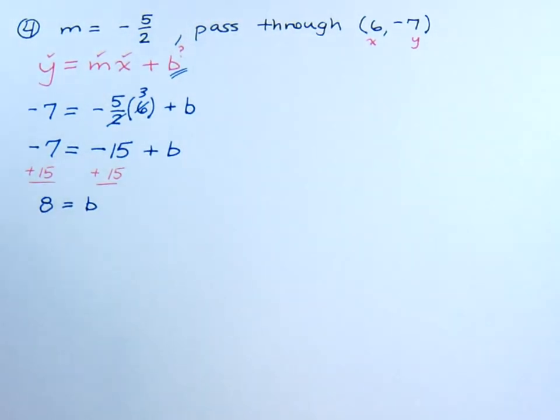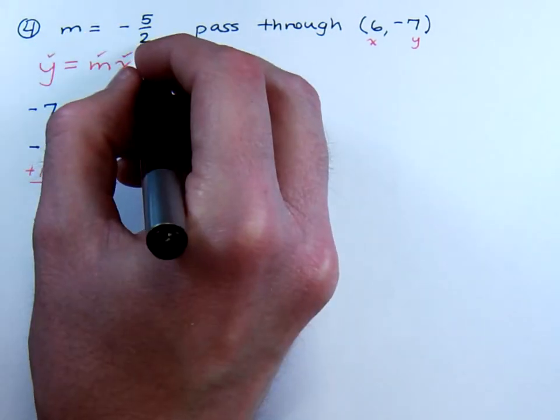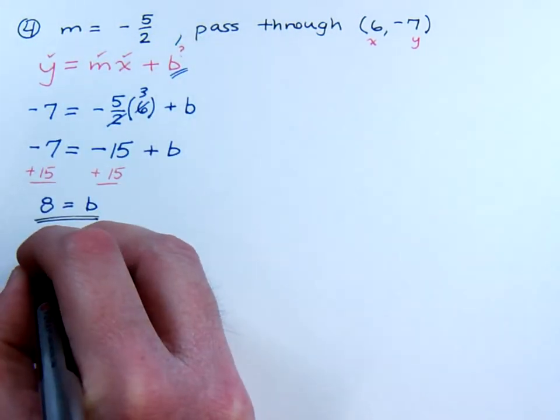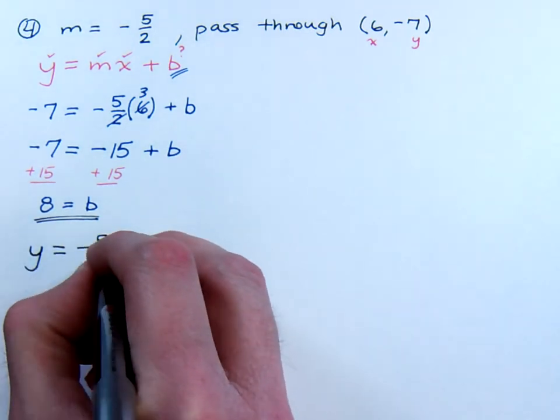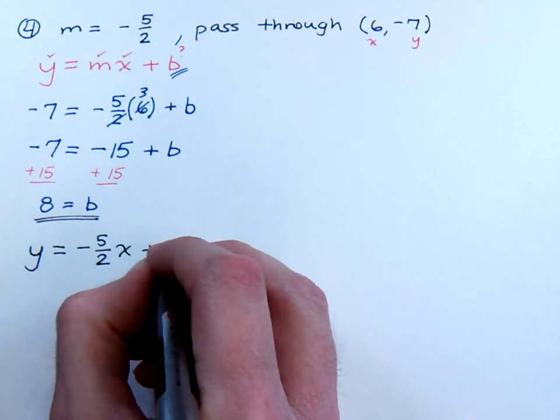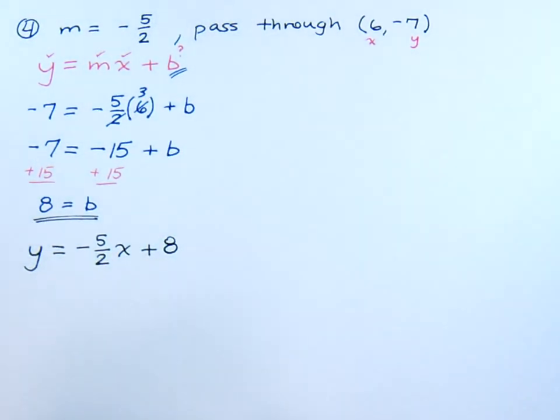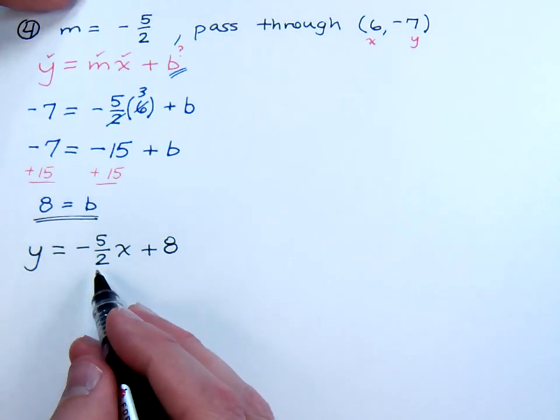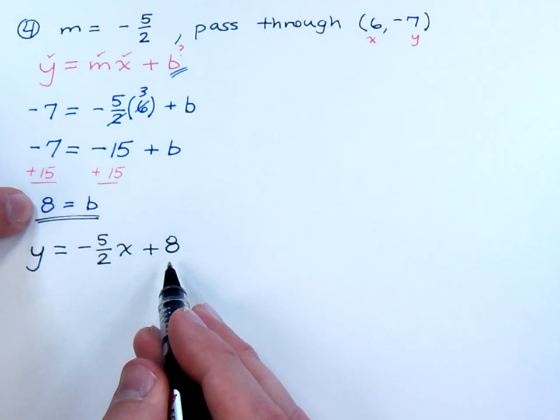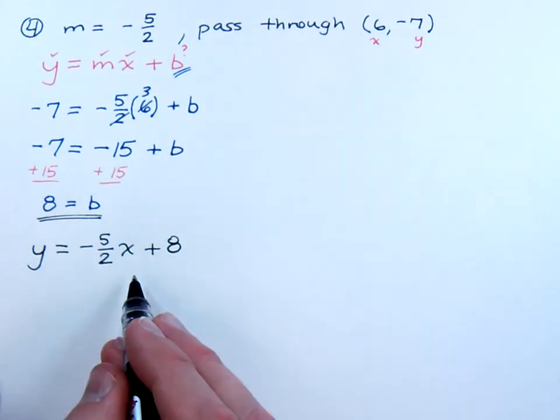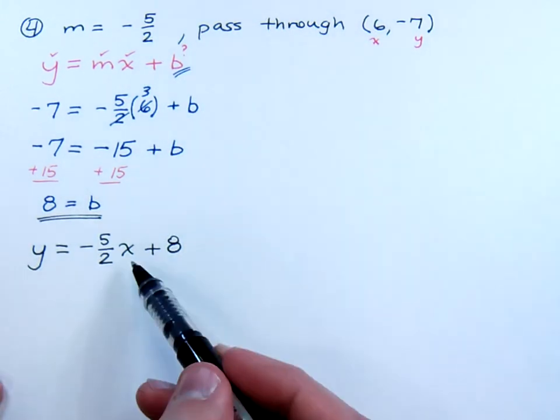So what we're going to do now is that we use this guy, the b, along with the slope to give me the equation for my line. y equals negative 5 halves x plus 8. I use my slope that was given up here. And I use my b that I found from here. So you see that this line, or this equation, does have a slope of negative 5 halves and it should pass to the point 6, negative 7.